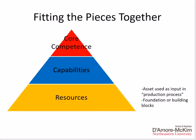As this graphic shows, internal analysis involves resources, capabilities, and ultimately core competence. We are going to start with resources because they represent the foundation of this pyramid. Resources are the assets used as inputs into the production process — they are the building blocks upon which capabilities and core competence are created, ultimately yielding the potential for sustainable competitive advantage.